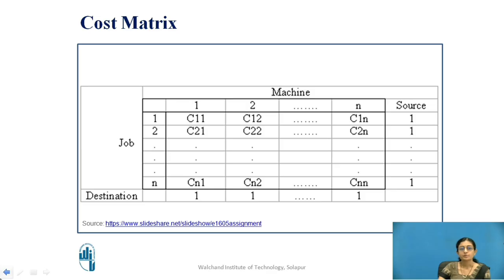When dealing with the assignment model and trying to find the optimal solution, we need a cost matrix. If there are 1 to n machines and 1 to n jobs, we prepare this cost matrix where the element Cij represents the cost required for machine i to be allocated to job j.